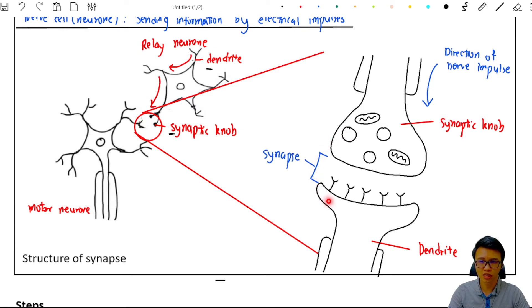To send the information across this synapse, there is only one way which is the neuron must convert the electrical impulses into a chemical signal so that it can diffuse across the synapse and then come to this dendrite.